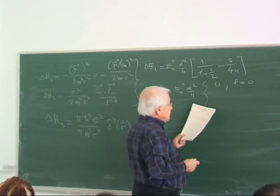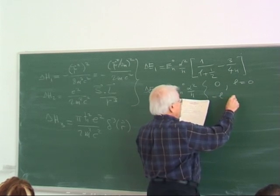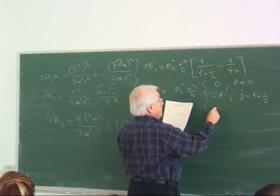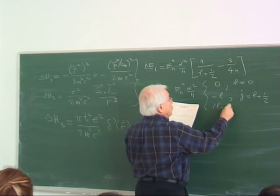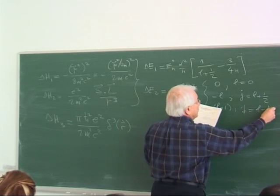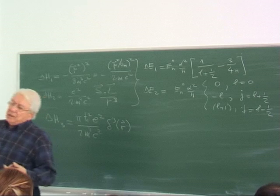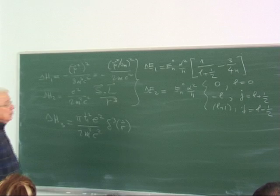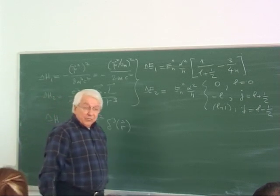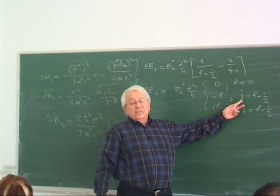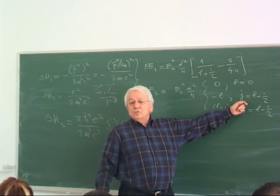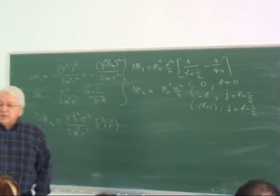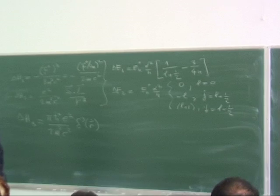For the spin-orbit term, delta E2, we have three separate cases: L equals 0; minus L for J equals L plus 1/2; and L plus 1 for J equals L minus 1/2. The addition of angular momentum requires that the total angular momentum eigenvalue J has two possible values — L plus 1/2 and L minus 1/2 — and the result must be expressed separately for each.